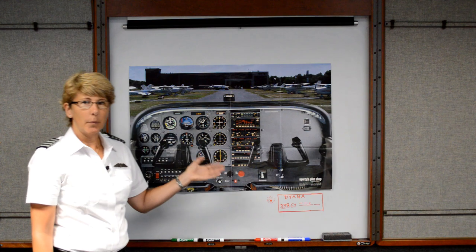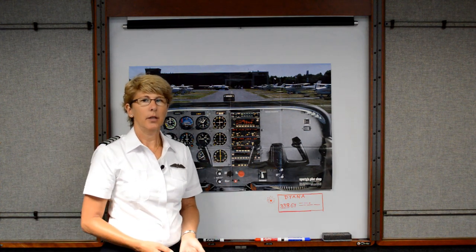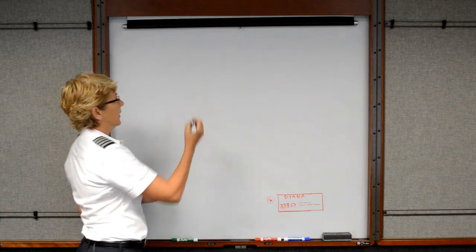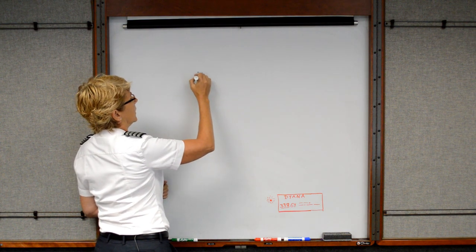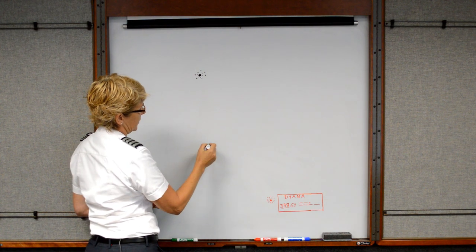So now we're going to take the poster down, and I'll draw out how you actually interpret these needles. Let's say that we have an NDB station here, and we want to fly past the station.